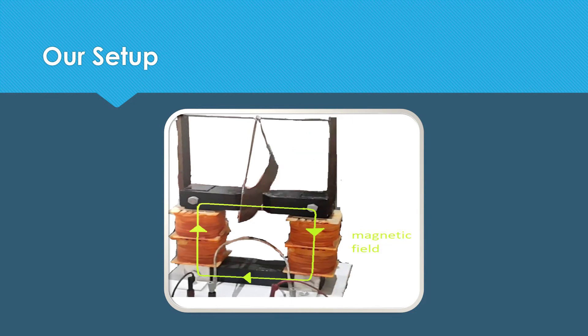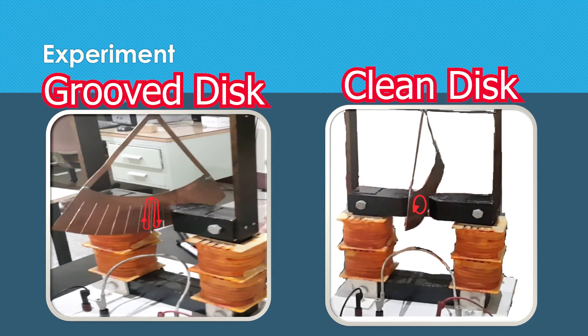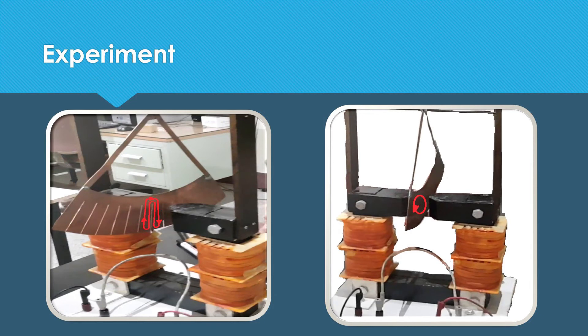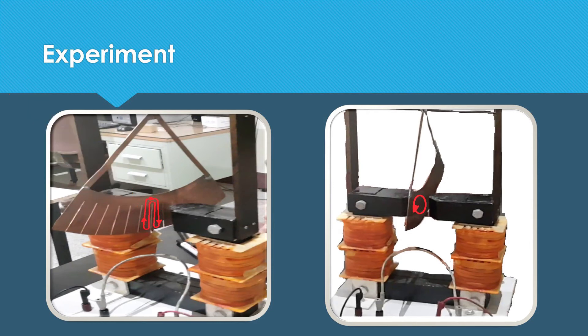We want to rotate two slices of disc in the middle. One of the slices has grooves and the other is clean. The current has to take a longer path to close its path in the grooved disc. Therefore, like the previous experiment, we expect the grooved one to stop later.